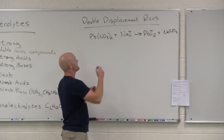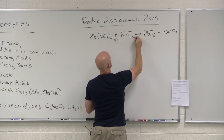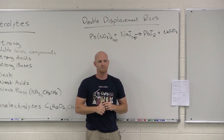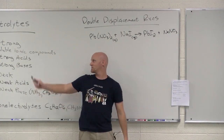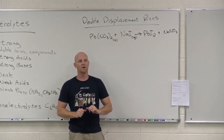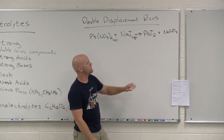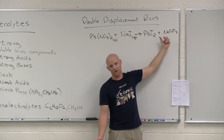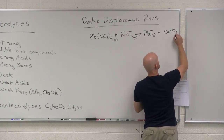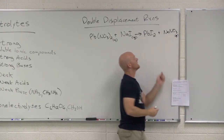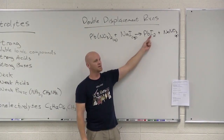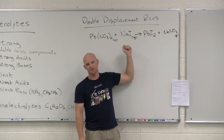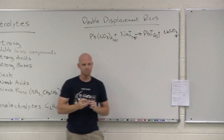The reactants are aqueous. To figure out whether the products are solid or aqueous, we look up the solubility rules. Sodium nitrate: any group one salt or any ionic compound with a nitrate is soluble, so it's aqueous. Lead iodide: most iodides are soluble, but lead, silver, and mercury(I) are exceptions — so lead iodide is insoluble and therefore a solid precipitate.